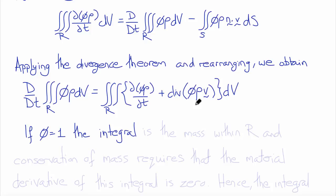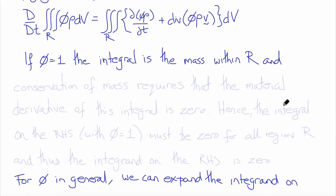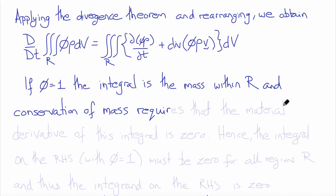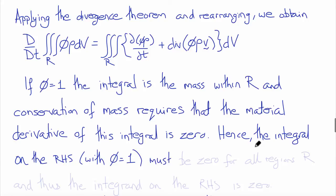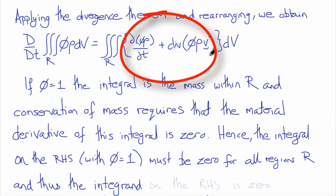Applying the divergence theorem and rearranging, we obtain that the material time derivative of the volume integral of phi times rho dV equals the volume integral of del(phi rho)/del t plus the divergence of phi times rho times V, integrated over the volume. In the special case when phi equals 1, this integral is the mass within R, and conservation of mass requires that the material derivative of this integral is zero. Hence the integrand itself must be zero.